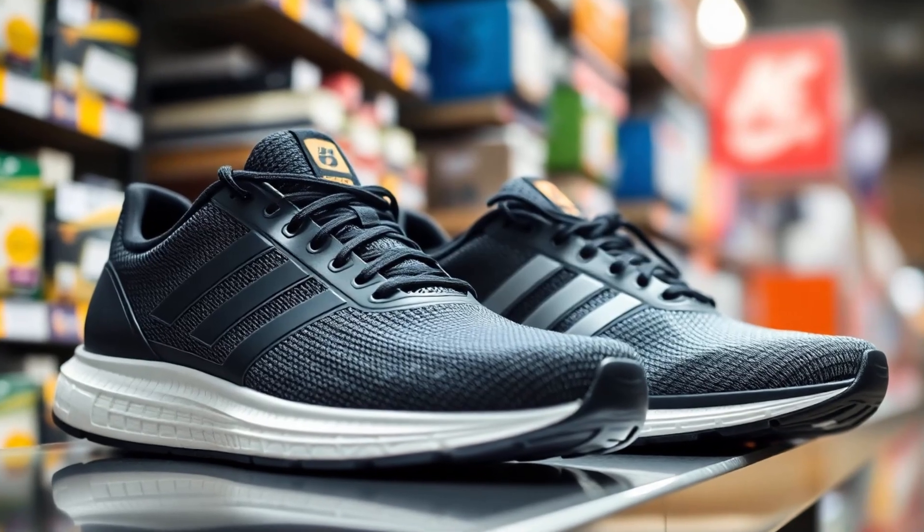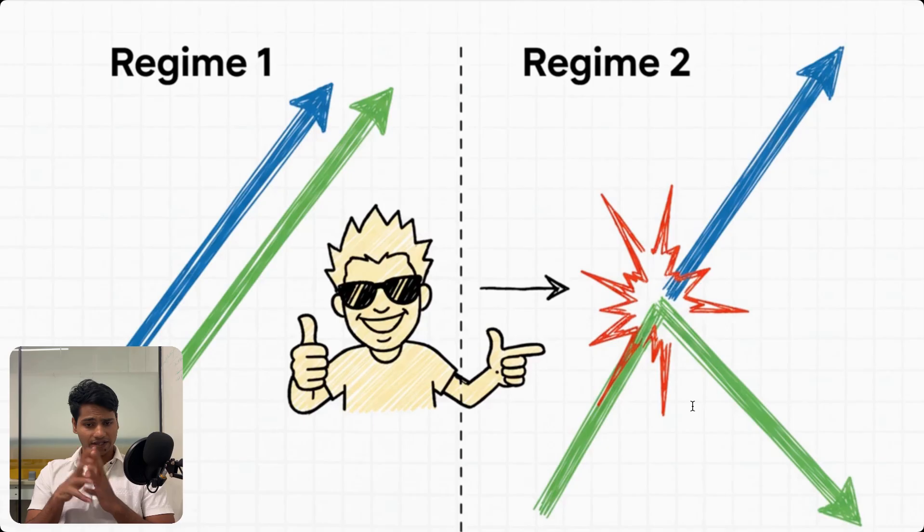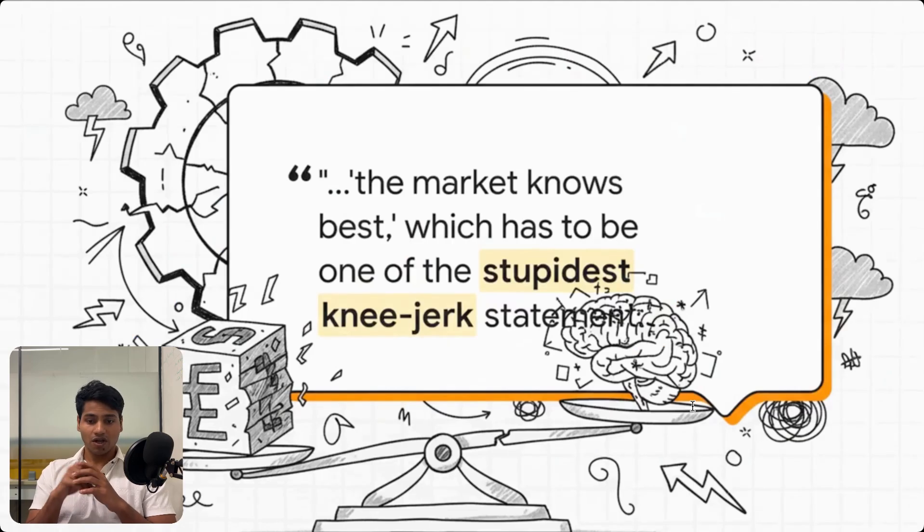Let me give you a perfect example. Imagine two running shoe companies. For years, their stocks move up and down almost together in perfect sync. Your model loves this. But then one of them signs a huge celebrity athlete contract, and suddenly its price goes through the roof while the other one fails. Boom. A single real-world event just completely shatters the mathematical relationship your entire model was built on.